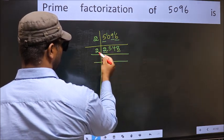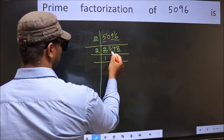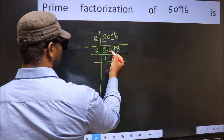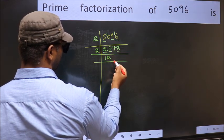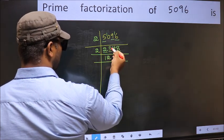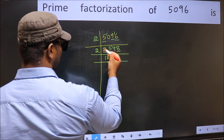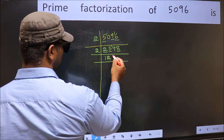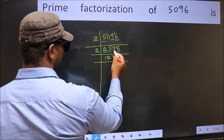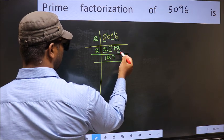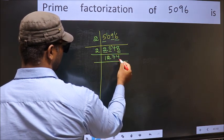First number 2 — when do we get 2 in the 2 table? 2 times 1 is 2. The other number 5 — a number close to 5 in the 2 table is 2 times 2 is 4. 5 minus 4 is 1, carried forward: 14. When do we get 14 in the 2 table? 2 times 7 is 14. The other number 8 — when do we get 8 in the 2 table? 2 times 4 is 8.